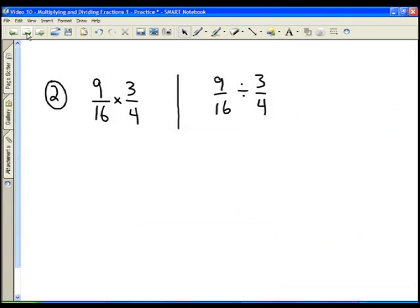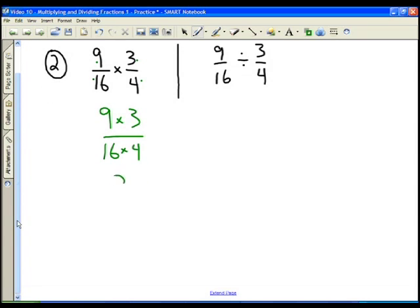In practice problem 2, we have 9/16 times 3/4. Again, there isn't anything that really looks like we can reduce from numerator to denominator. And so we're just going to go ahead and follow our rule for multiplying fractions, which is multiplying straight across the top and straight across the bottom. And so 9 times 3 is 27, and 16 times 4 is 64. So we get 27 over 64.